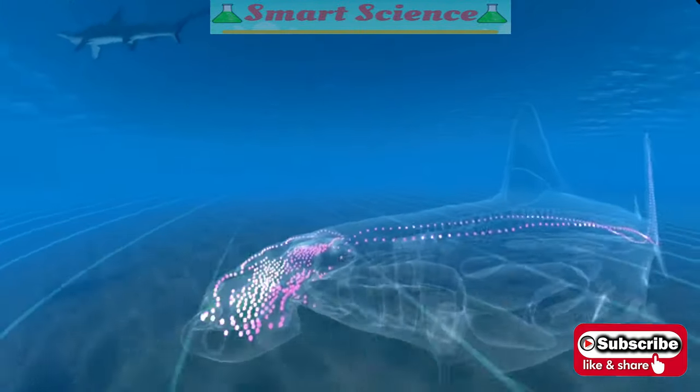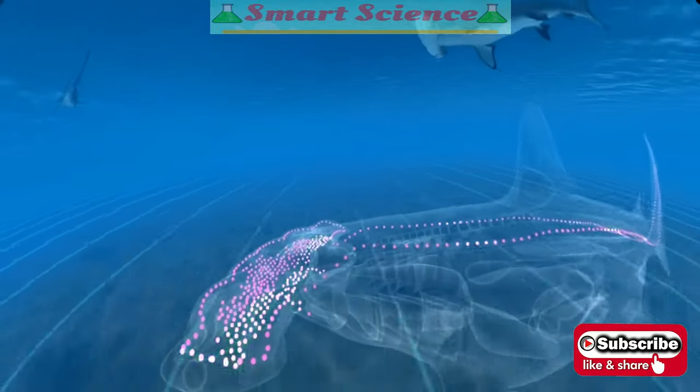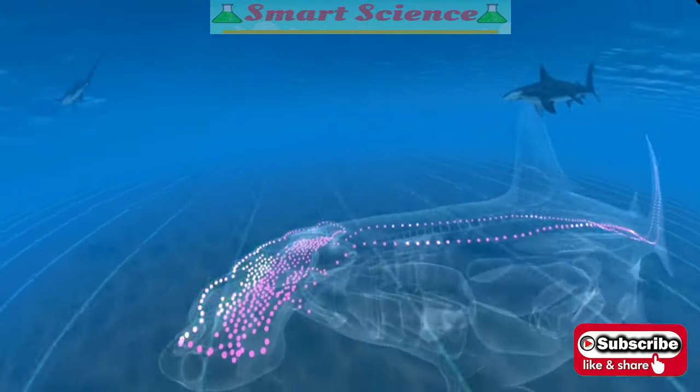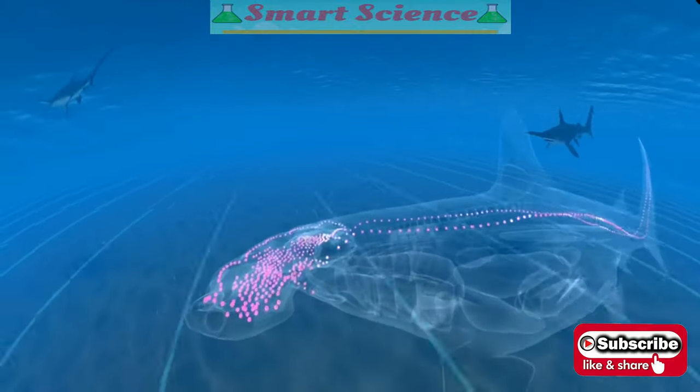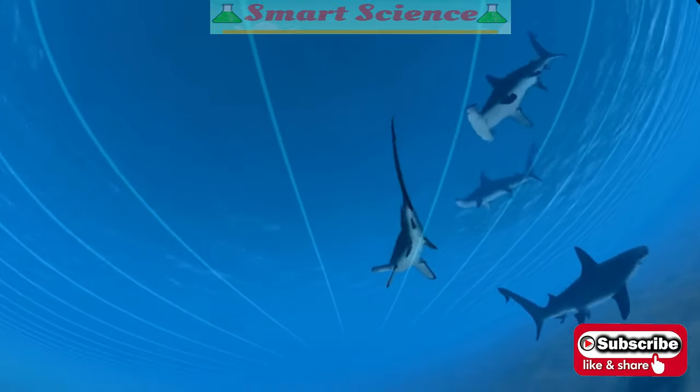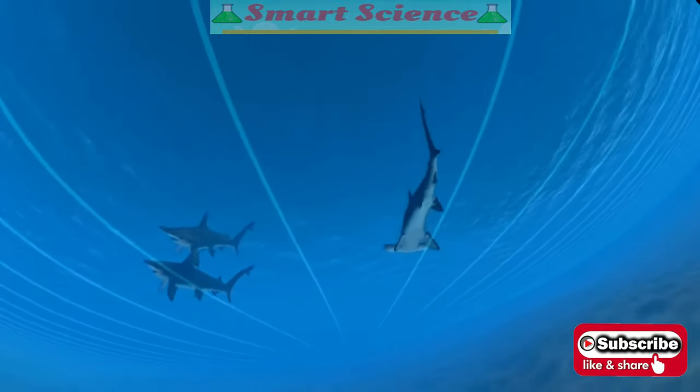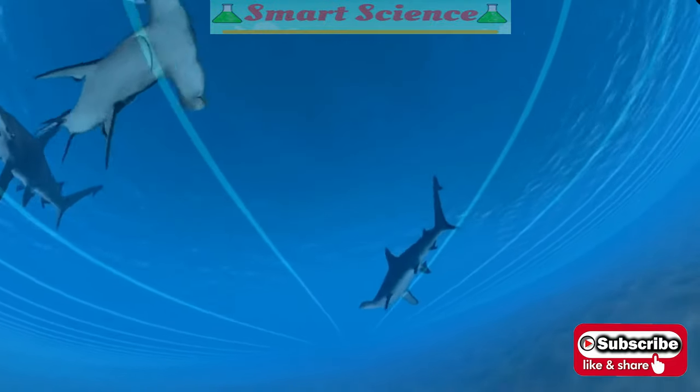Hammerhead sharks have special gel-filled organs called the Ampullae of Lorenzini, which detect electric fields, both natural fields and those created from swimming across magnetic fields. Sensitivity to magnetic fields helps sharks and other fish swim in straight lines across the open ocean.